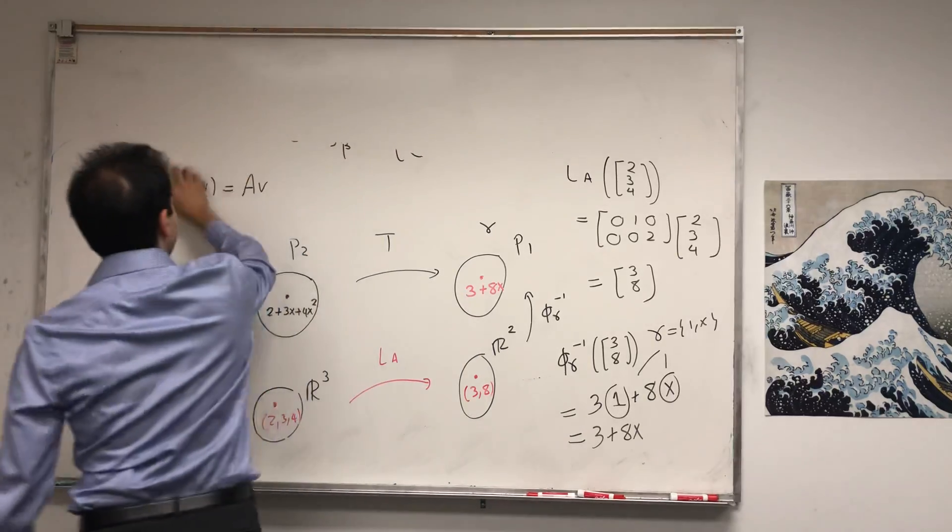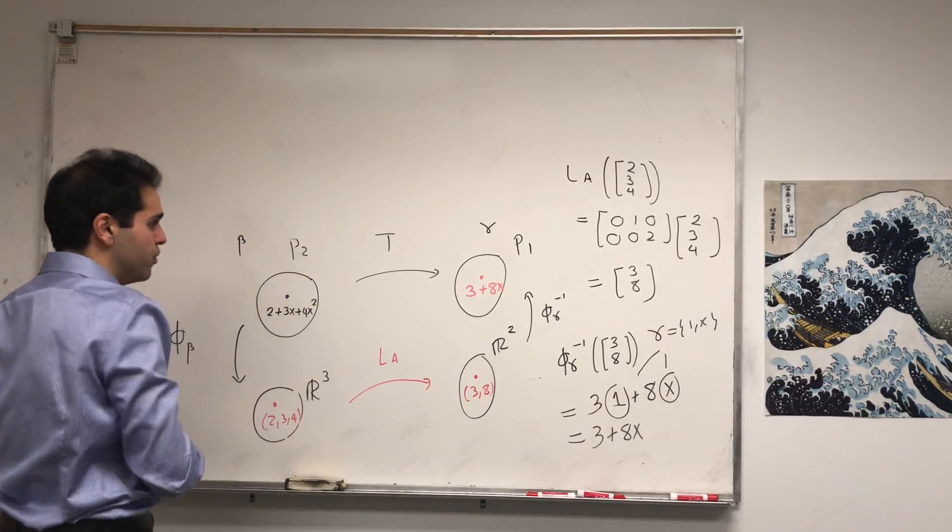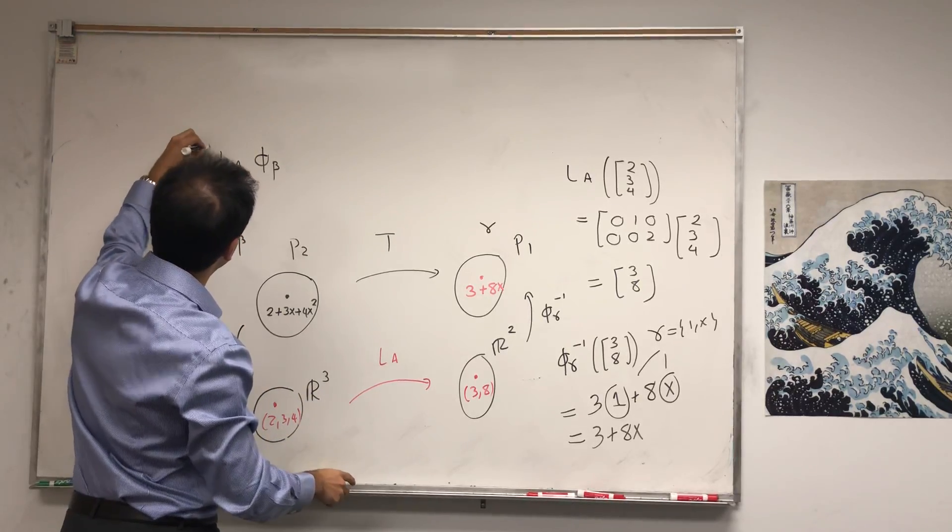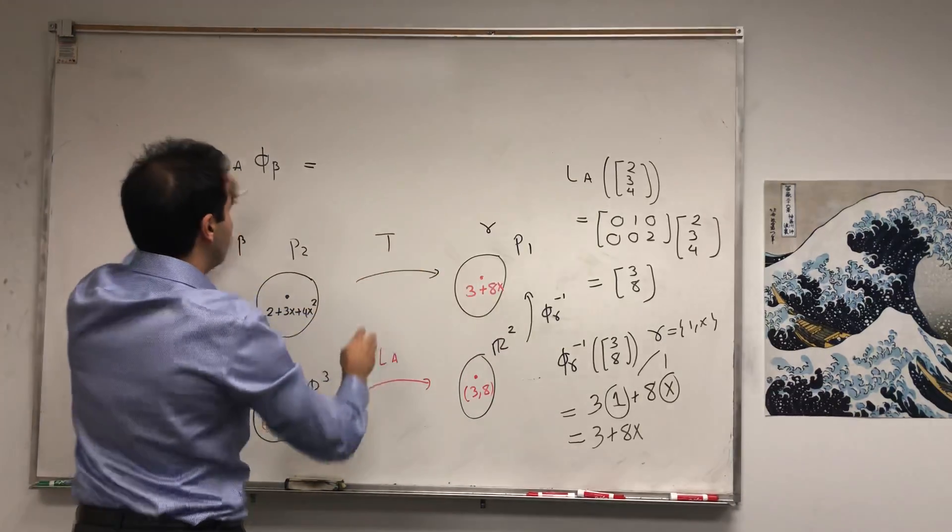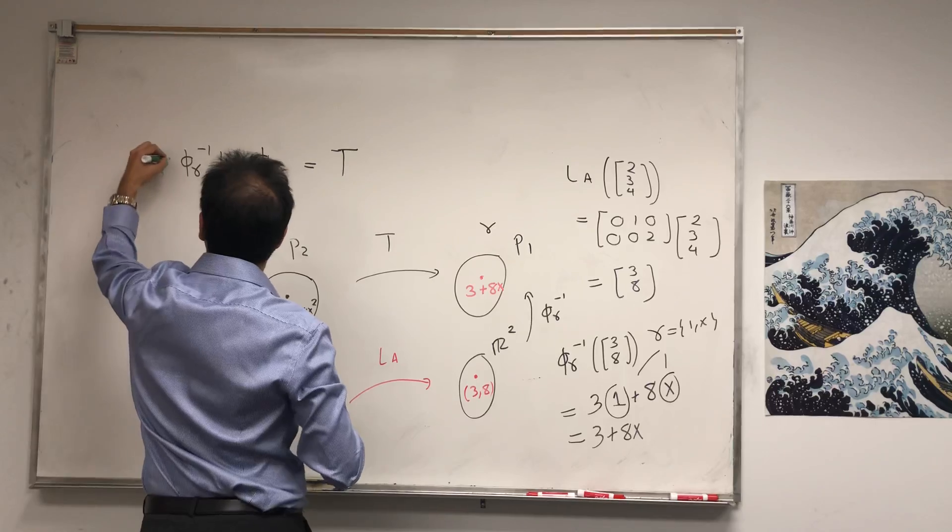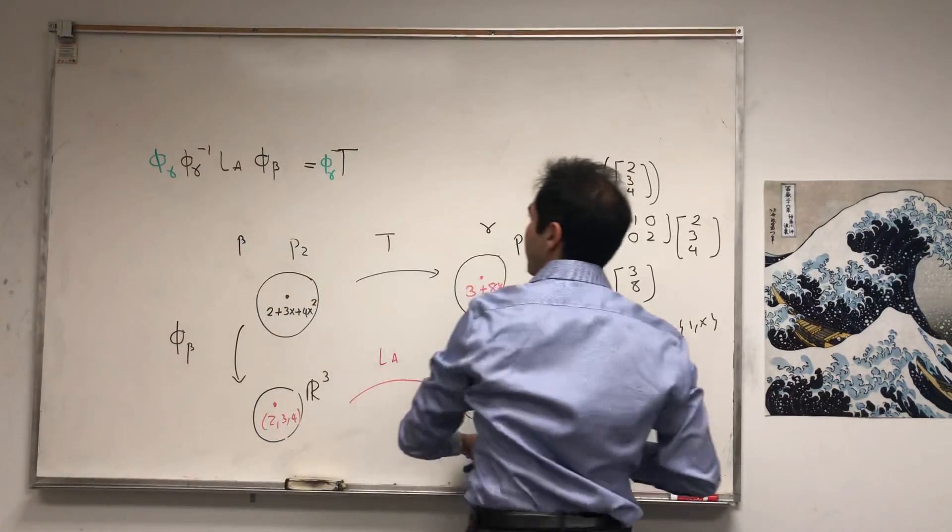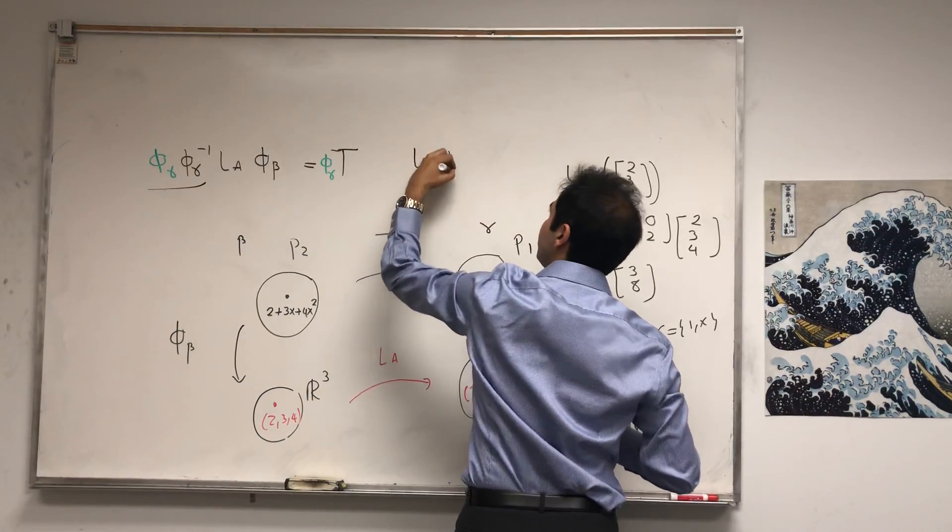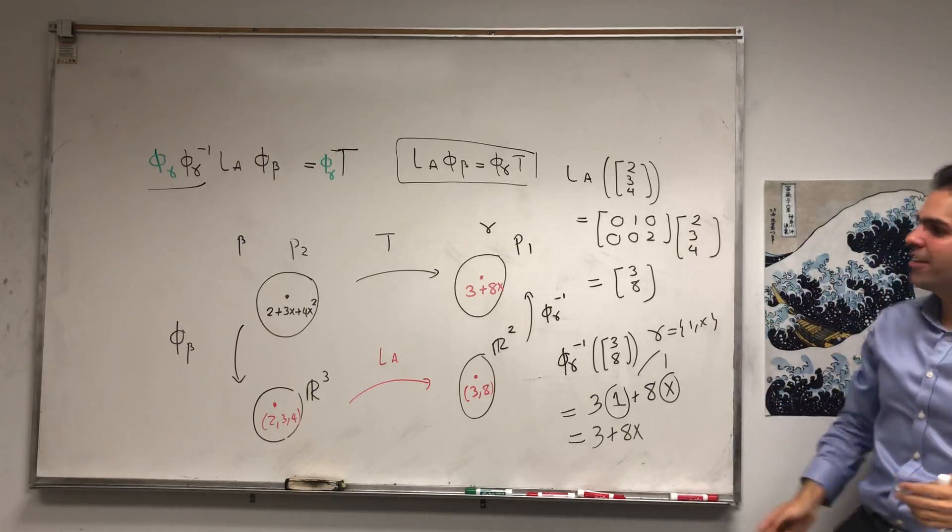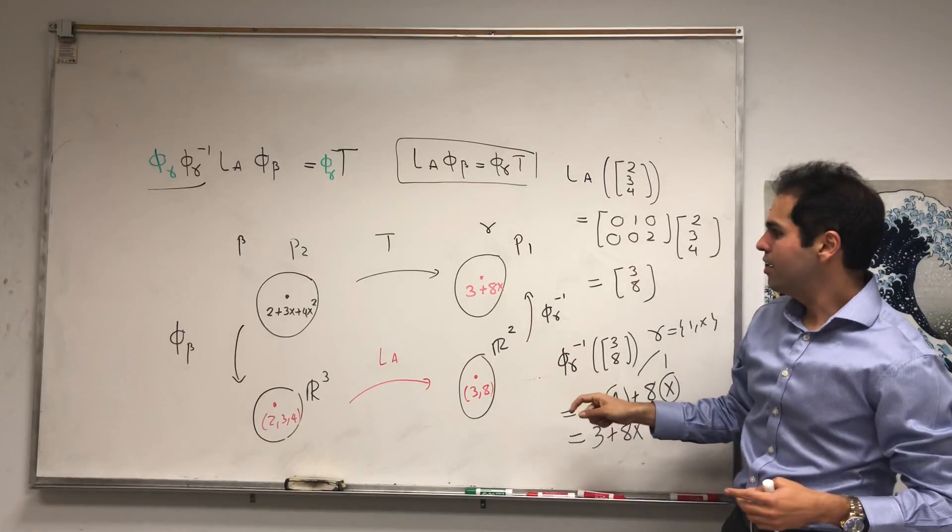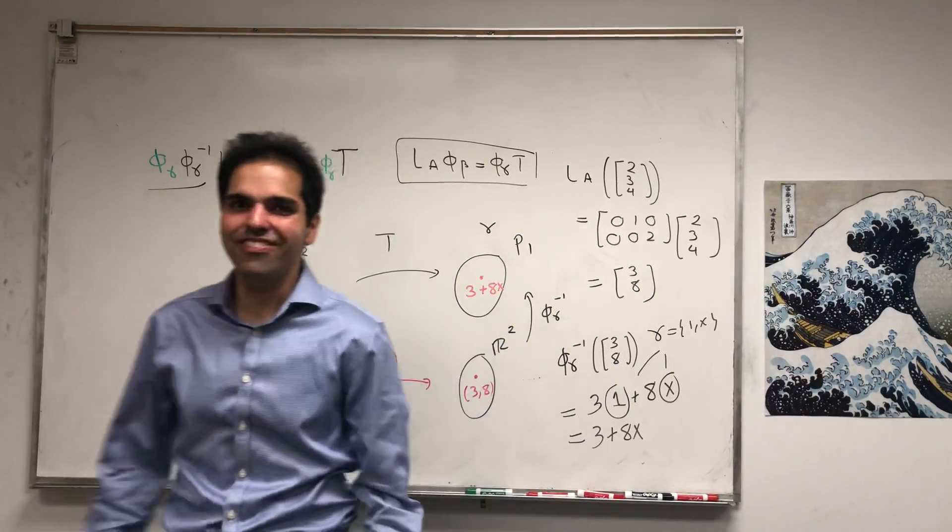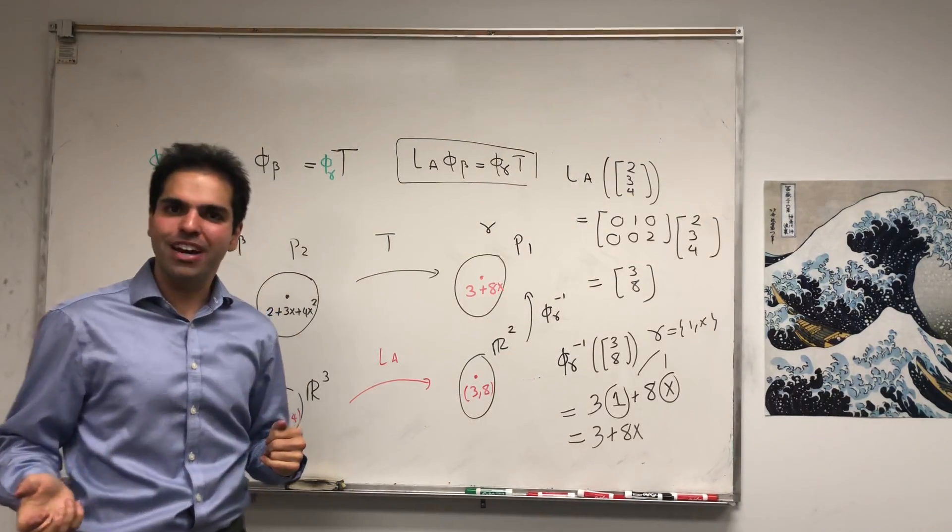And in the end, by the way, what do we get? What is this saying? It says that if you first apply φ_B, and then you apply LA, and then you apply φ_γ inverse, this whole process is just T. And if you just multiply by φ_γ, you do get in the end that LA φ_β equals φ_γ T. This is what's called a commutative diagram. What's basically going from here to here is the same thing as going from here to here with φ_γ. All right, so I hope you like this interesting way of differentiating functions. If you want to see more math, please make sure to subscribe to my channel. Thank you very much.